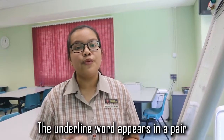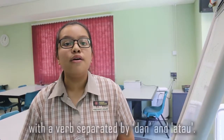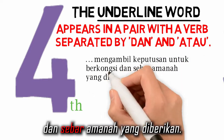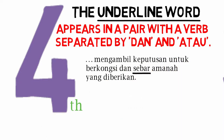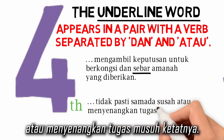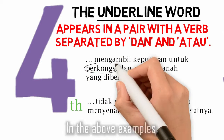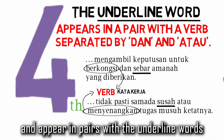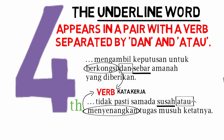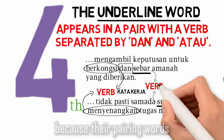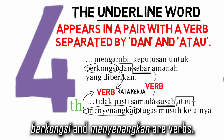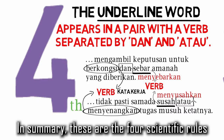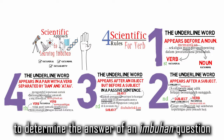The fourth rule: the underlined word appears in a pair with a verb separated by dan or atau. For example, 'Mengambil keputusan untuk berkongsi dan sebar amanah yang diberikan' and 'Tidak pasti sama ada susah atau menyenangkan tugas musuh ketatnya.' In the above examples, berkongsi and menyenangkan are verbs, and they appear in pairs with the underlined words separated by dan and atau respectively. Thus, the underlined words have to be turned into verbs. So the answers for these examples are menyebarkan and menyusahkan respectively. In summary, these are the four scientific rules to determine the answer of an impohan question is a verb.